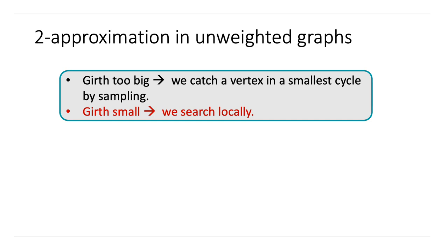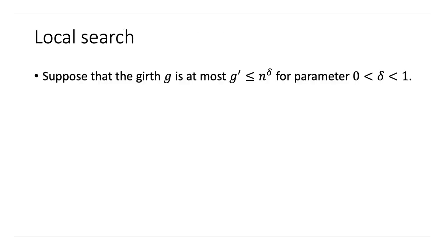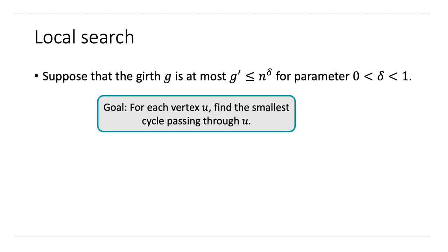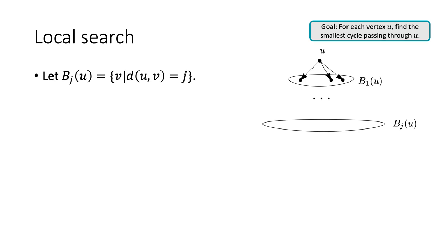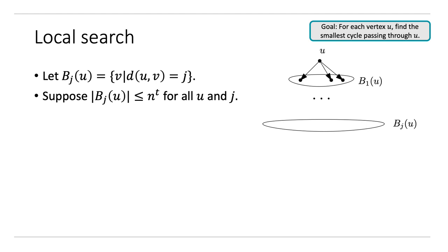We're going to focus on the local search part, which uses the modified BFS. Suppose that the girth g is at most g prime, which is less than N to the delta for some parameter delta less than 1. Our goal is: for every vertex u, find the smallest cycle passing through u that has length at most g prime. We are first going to do normal BFS from all vertices. Let's call the j-th level of the BFS from u, B_j of u — it consists of vertices with distance j from u. Let's assume all these B_j sets are small, having at most N to the t vertices for some parameter t less than 1.